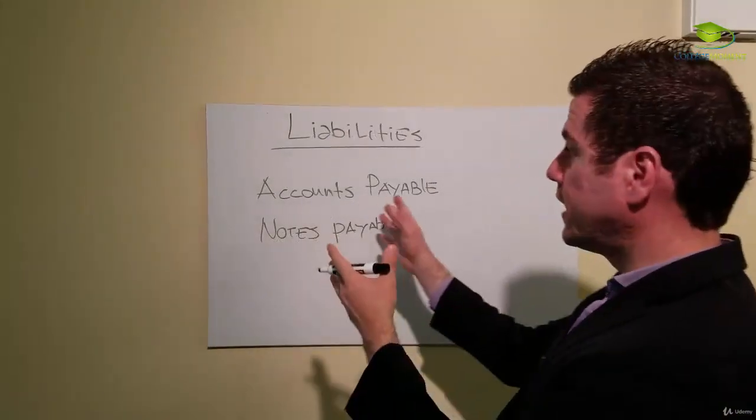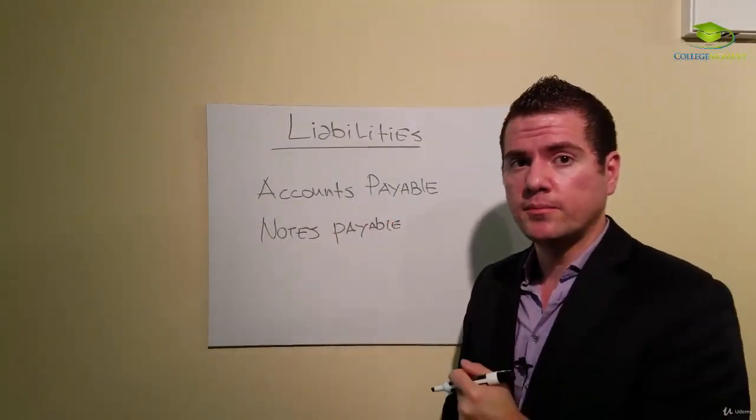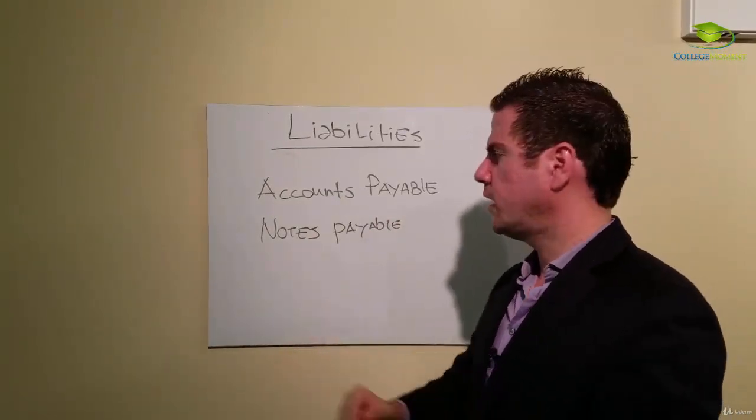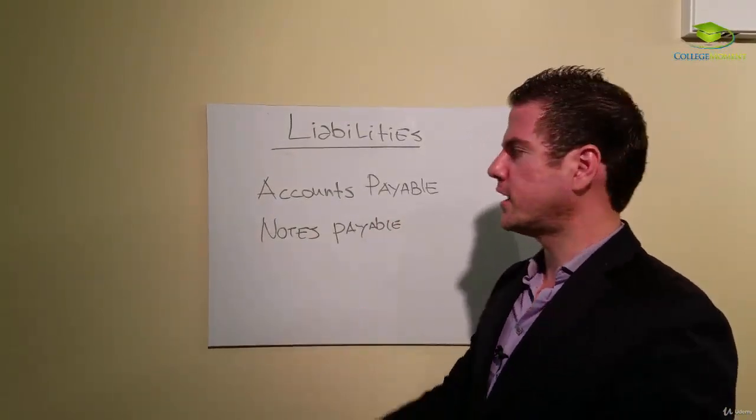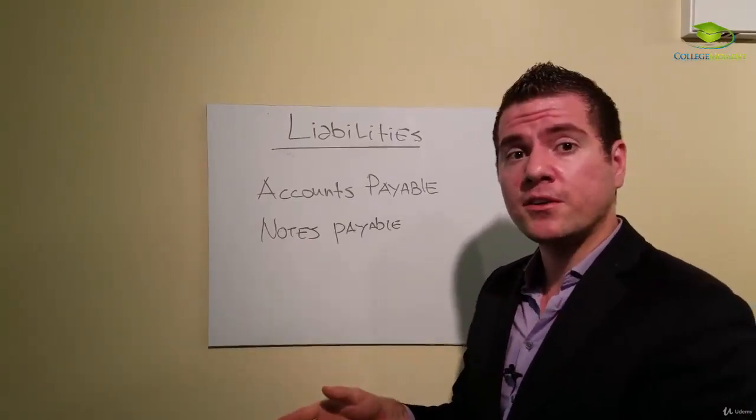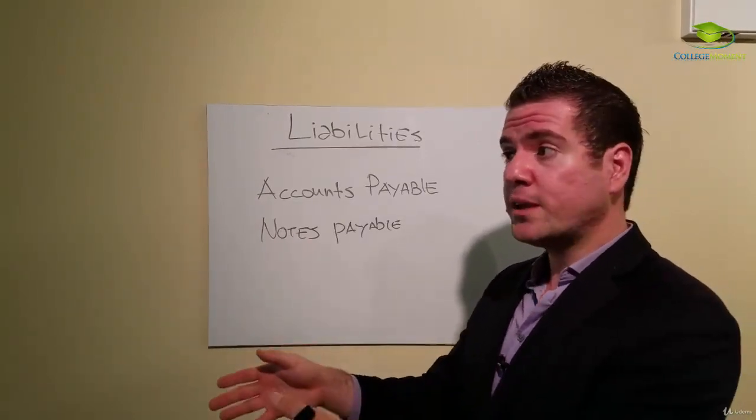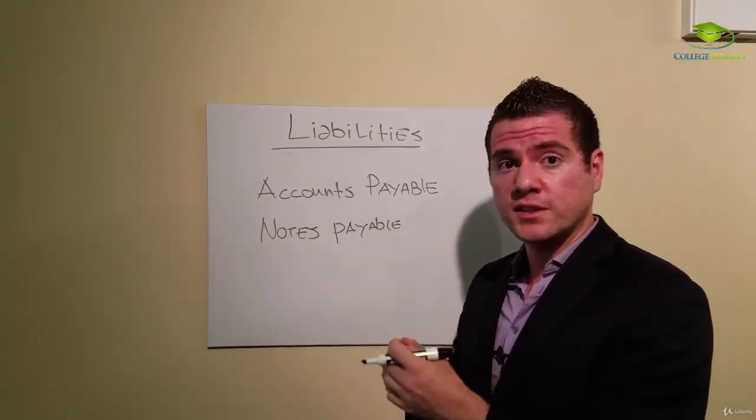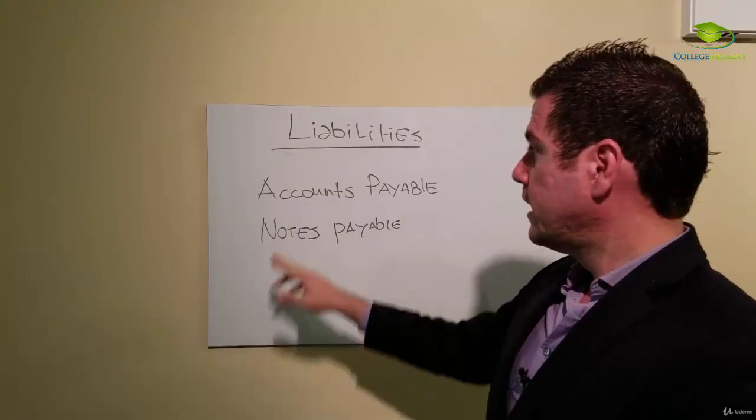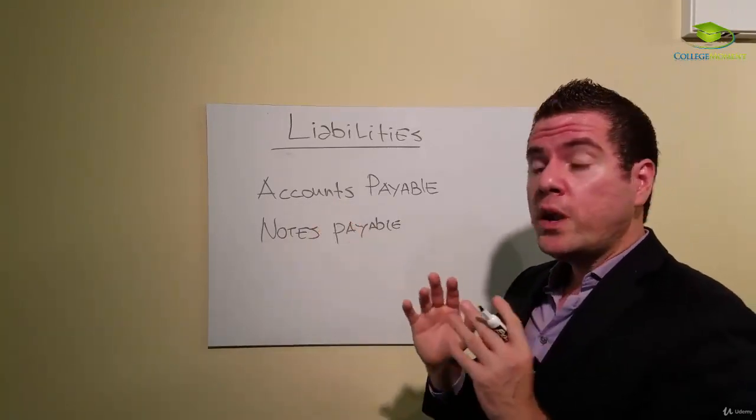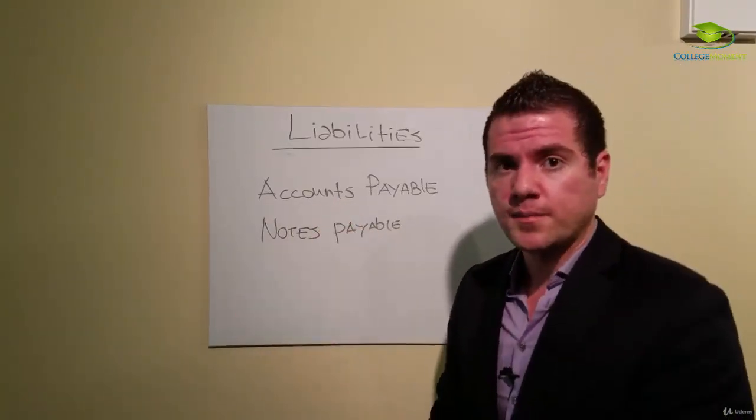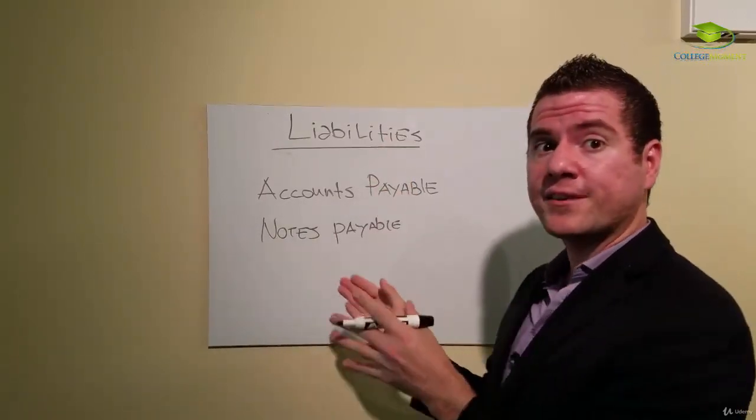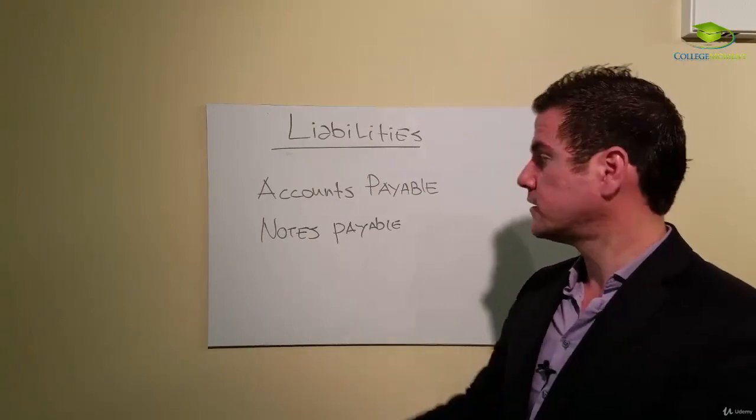Next items are liabilities. We have accounts payable—this is something that we owe to someone. Did I discuss accounts receivable before? Accounts receivable is something of value that we own. Actually, somebody owes us money, so we have a claim against their assets. That means they owe us, so this is an asset. But accounts payable—we owe somebody else, therefore we have a liability, or they have a claim against our assets.